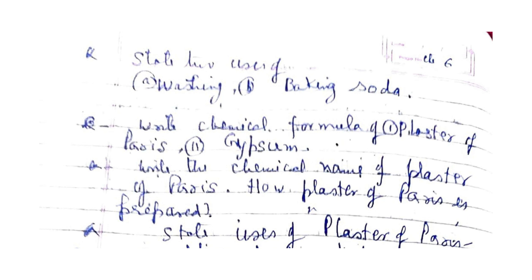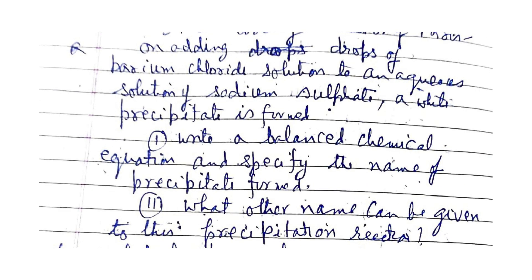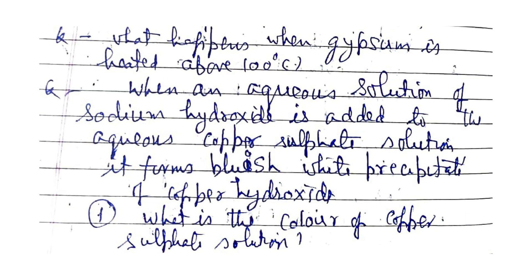Write the chemical formula of plaster of paris and gypsum. Write the chemical name of plaster of paris. How is plaster of paris prepared? State the uses of plaster of paris. On adding drops of barium chloride solution to an aqueous solution of sodium sulfate, a white precipitate is formed — write a balanced chemical equation, specify the name of the precipitate formed. What happens when gypsum is heated above 100 degrees Celsius?